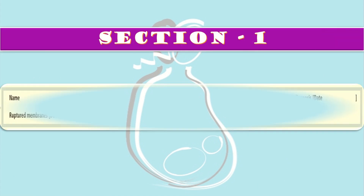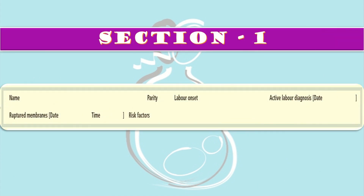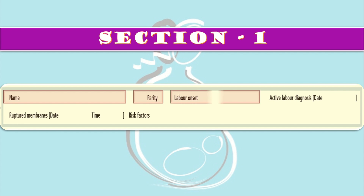In Section 1 of the WHO Labor Care Guide, we first write the full name of the patient. For parity, extract from the medical records the number of times the woman has given birth to a baby after the age of viability. Next is labor onset — we write whether the onset of labor was spontaneous or induced.